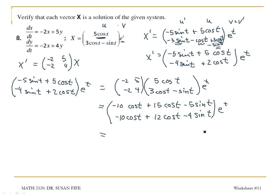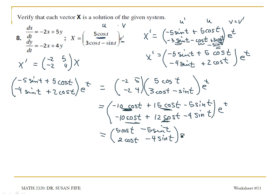Now when I combine like terms, in the first row the cosine t terms combine to give 5 cosine t minus 5 sine t. In the second row, negative 10 cosine plus 12 cosine gives 2 cosine t minus 4 sine t, times e to the t. That should equal negative 4 sine t plus 2 cosine t, times e to the t — and that checks.